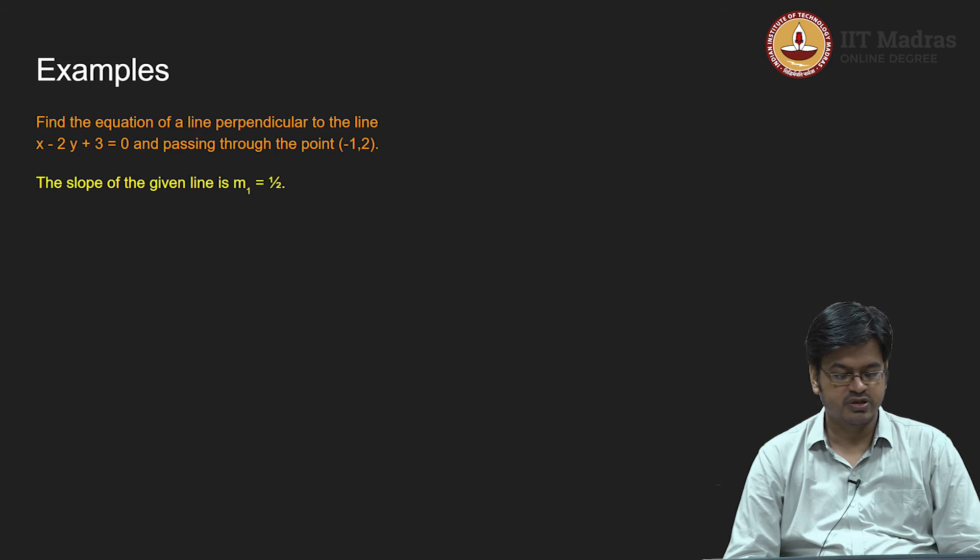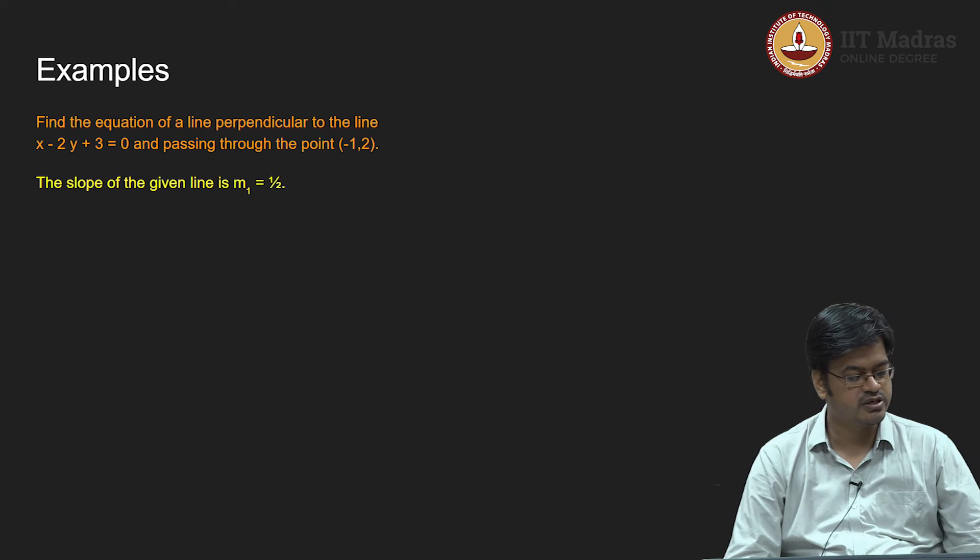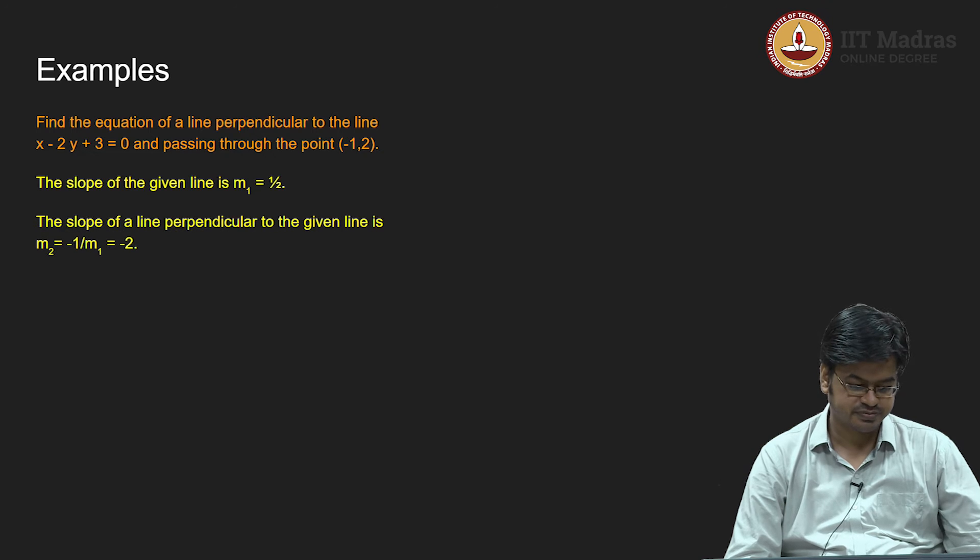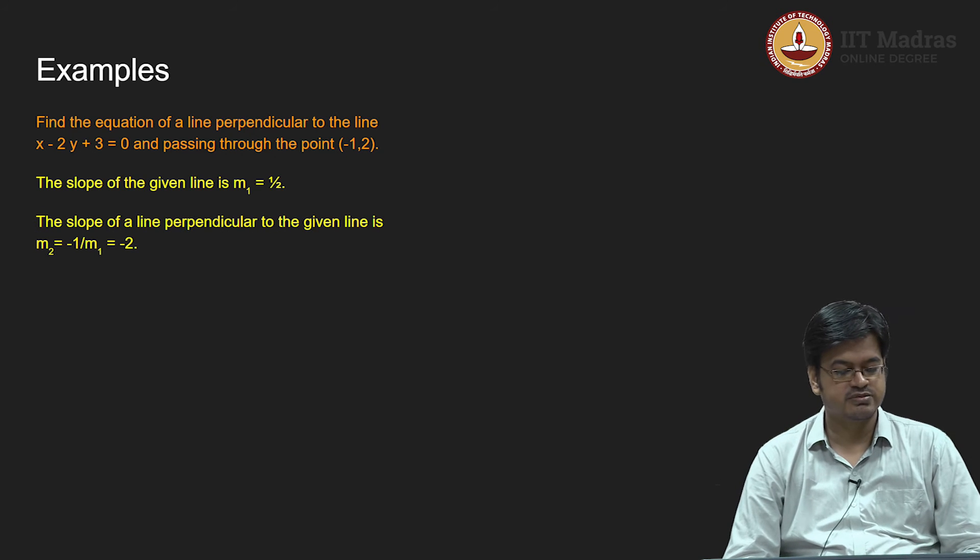If the product of the slopes is minus 1, then m1 into m2 equals minus 1, that is m2 equals minus 1 upon m1. So minus 1 upon m1, m1 is half, which will give me m2 to be equal to minus 2.